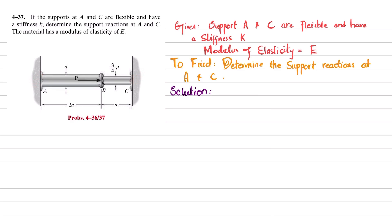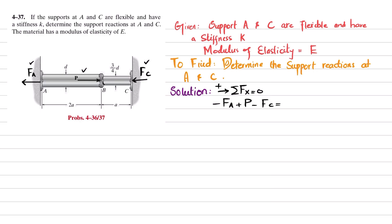Let's start with the solution. The first step is to remove the reaction support at point C, giving reaction force FC, and remove the support at point A, giving reaction force FA. Applying the equation of equilibrium, the sum of all forces along the x-direction must equal zero: minus FA minus FC plus P equals zero, so minus FA plus P minus FC equals zero.